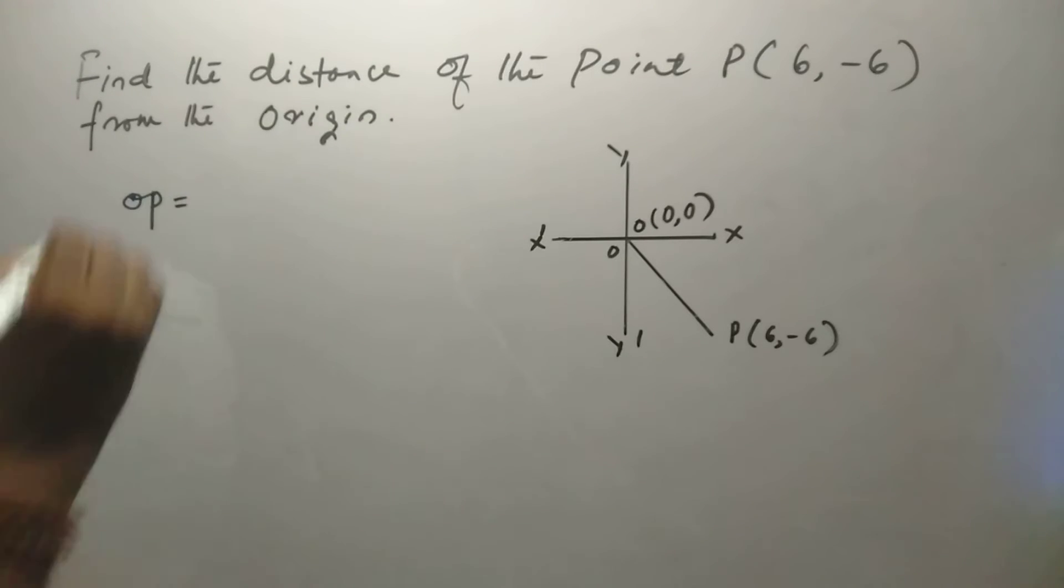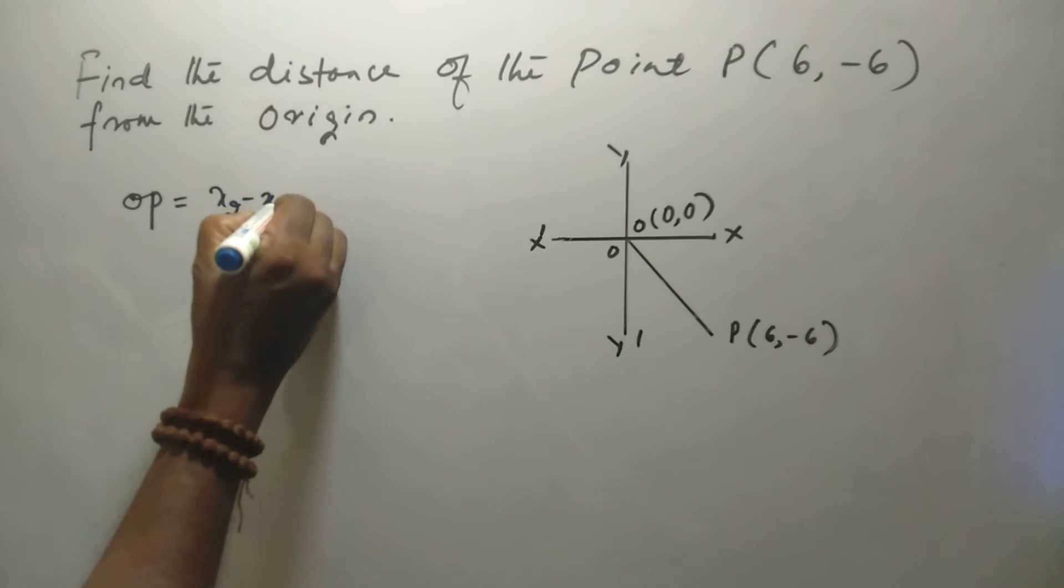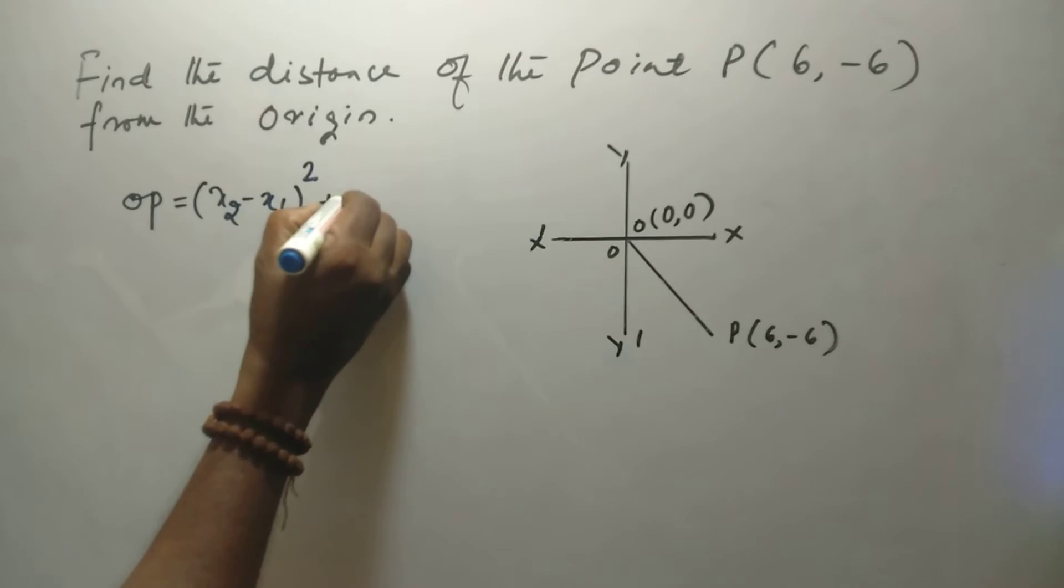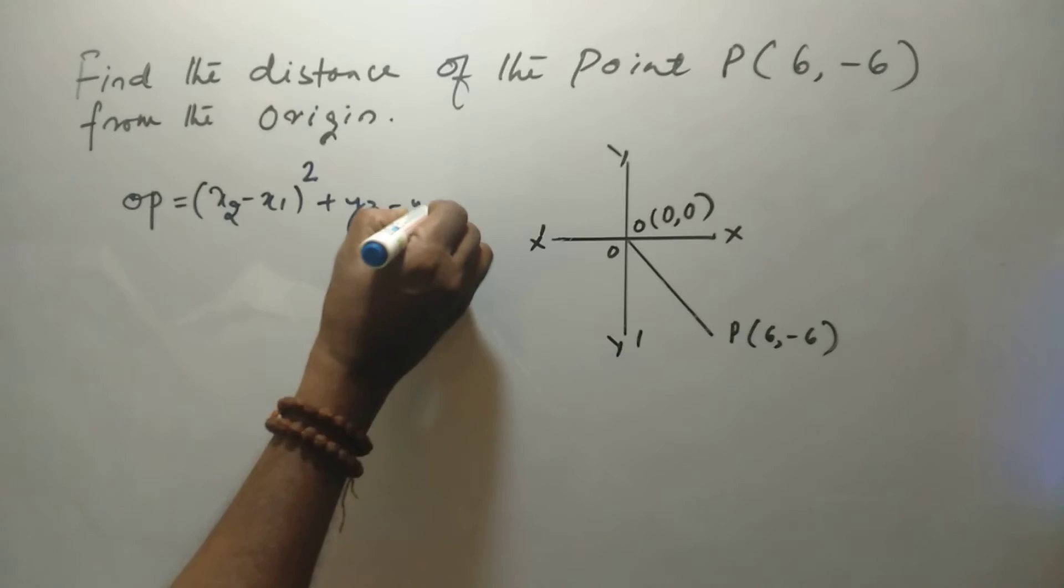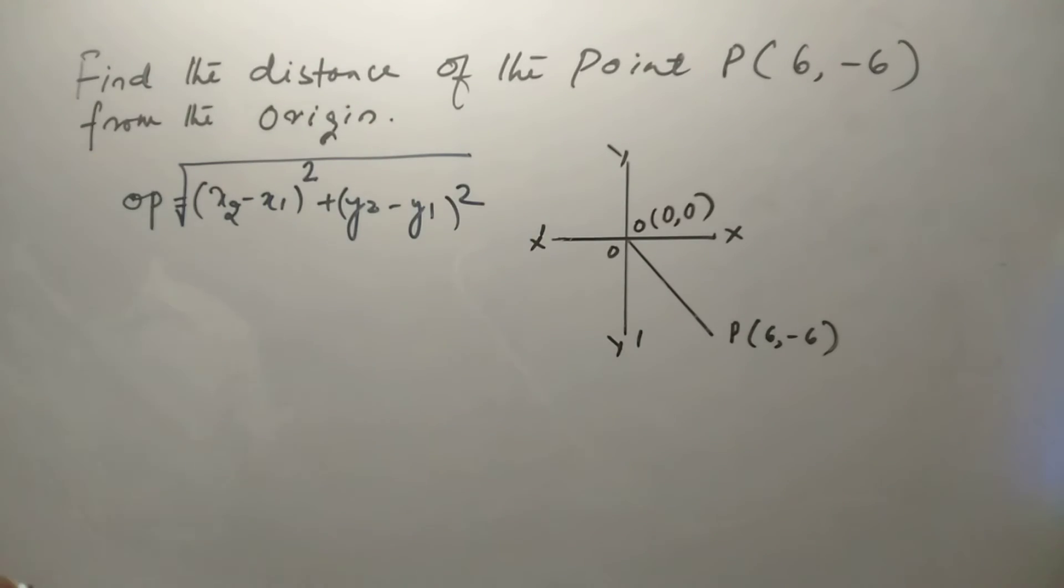So, OP, the distance, is equal to square root of (x2 minus x1) whole square plus (y2 minus y1) whole square, by the distance formula.